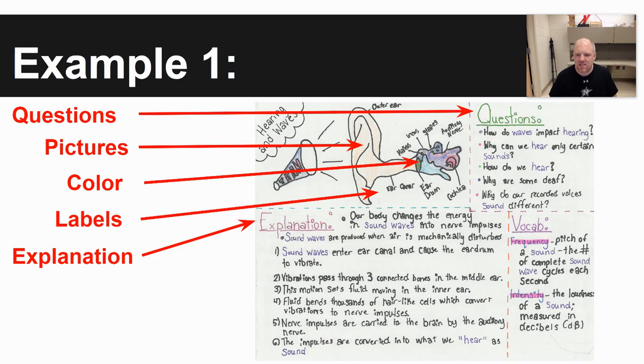In case you want to look at some examples, these are just some student-produced scientific models. The first one is how hearing works with waves, and so what you can see is the five different components are labeled here.